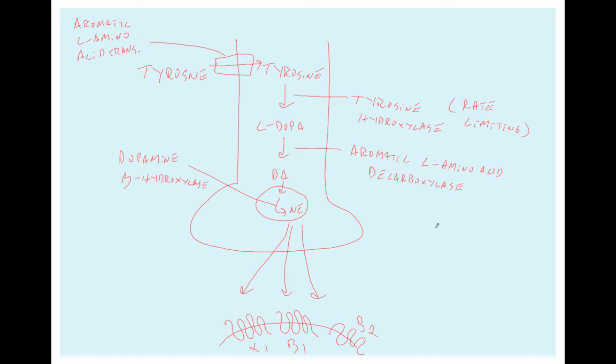The norepinephrine that's released can also bind to presynaptic receptors, termed autoreceptors, and these are alpha-2. These alpha-2 receptors are coupled to inhibitory G proteins that can inhibit the release of norepinephrine, so it's a negative feedback loop.